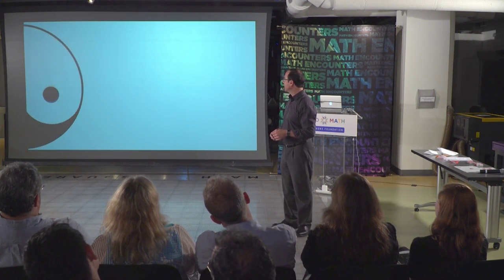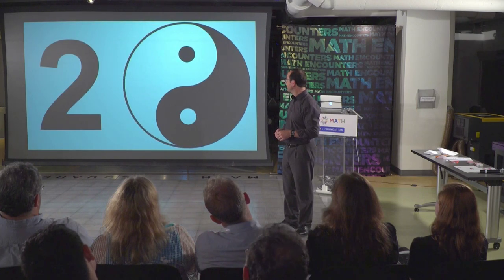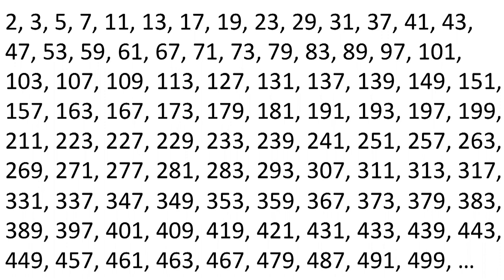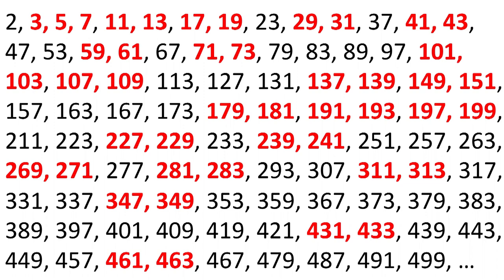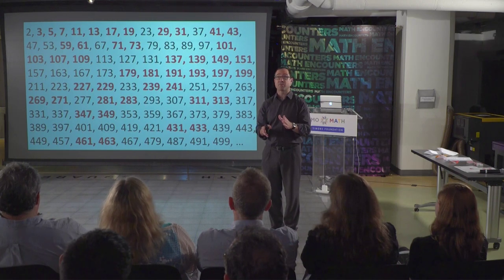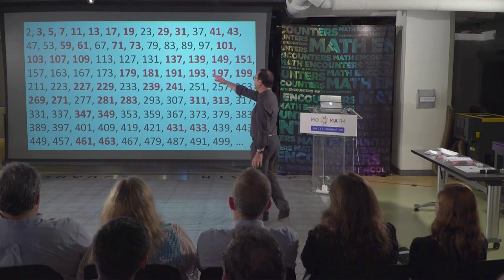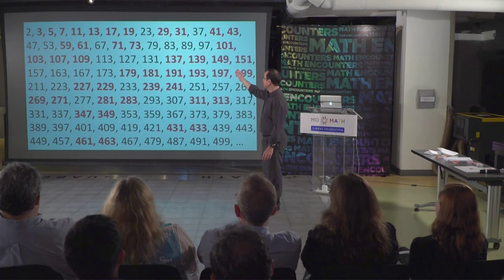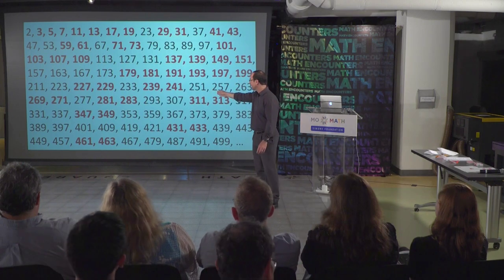Let's move on to the number two. Here's a bunch of numbers — they are prime numbers, numbers that only 1 and the number itself divide into. But I'm going to look at these red ones in this list. What are these red numbers? Twin primes. These are primes that are just two apart. So 3 and 5 are two apart, 5 and 7, 11 and 13, 281 and 283, et cetera.